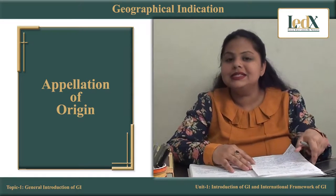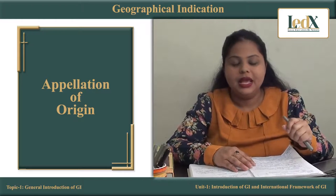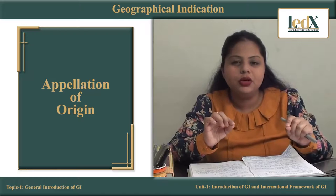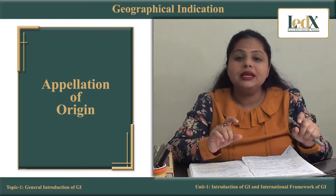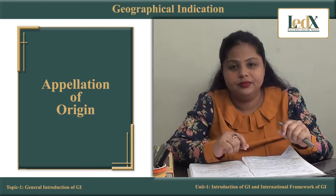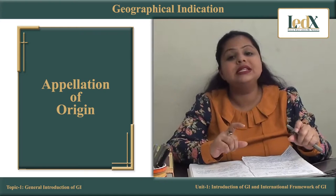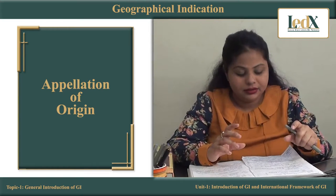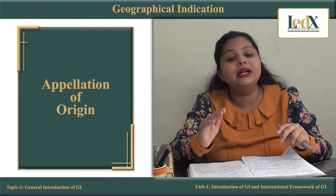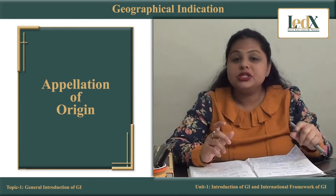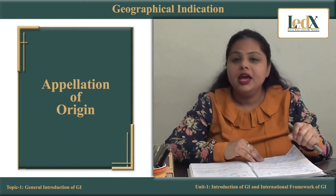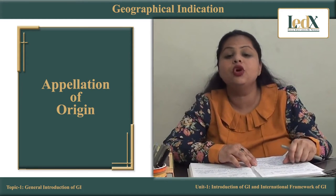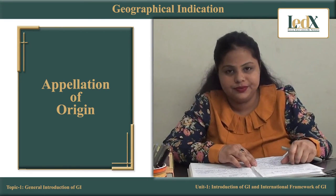Another famous example is champagne. We all know about champagne, so let me just give you a brief. Champagne is a village in the France region. Champagne also received its name from that particular area. It is a sparkling wine prepared from the grapes grown in the particular region of France which is called by the name Champagne. We will discuss about the conflicts and controversies related to these famous appellations of origin as we move forward with our discussion.